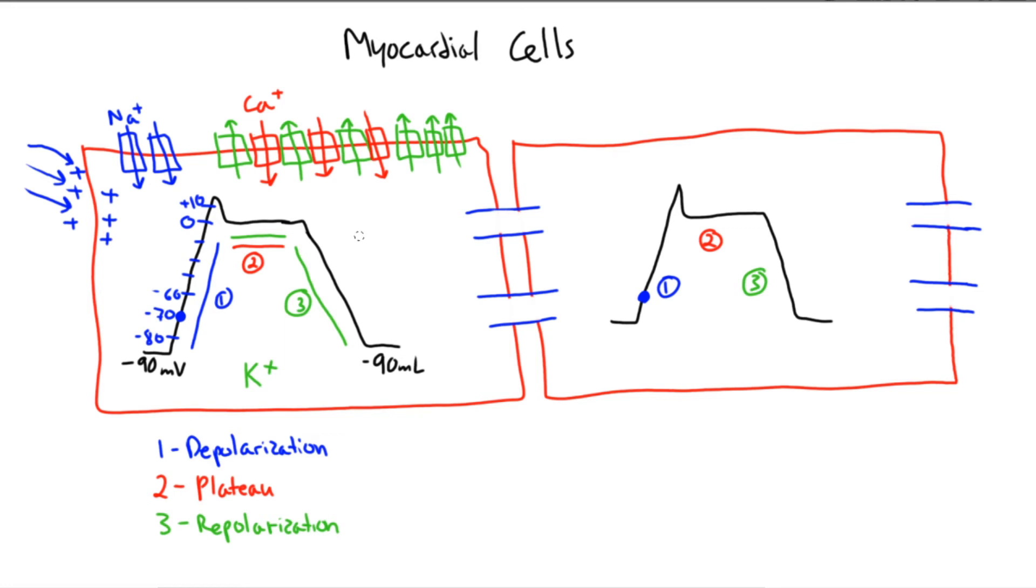After that brief moment, eventually calcium channels close, but potassium channels stay open and potassium continues to leave the cell. Since potassium is positively charged, the cell starts to lose its charge and moves back to its negative state until it reaches its resting potential of negative 90 millivolts, and this process is called repolarization.